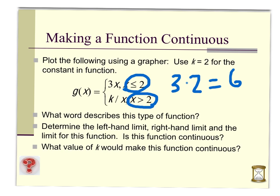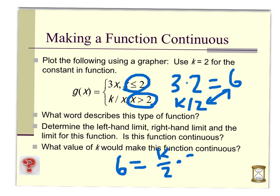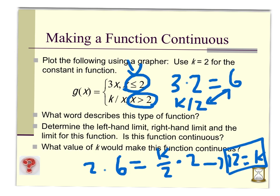The left-hand limit is defined by the piece where x is less than or equal to two. At x equals two, we plug two into that equation and get six. For the right-hand limit, we plug two into the right-hand piece and get k divided by two. For continuity, these two limits must be equal, so we set up the equation: six equals k over two. To undo division, we multiply both sides by two, giving us k equals 12. With k equal to 12, both limits match, the limit exists, and since the left-hand piece includes the equal sign, f(2) equals six — so the function is continuous.